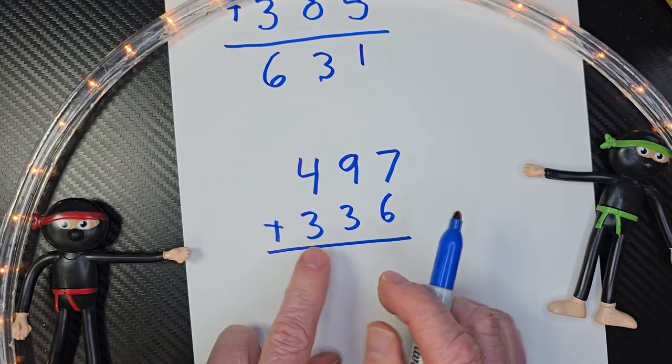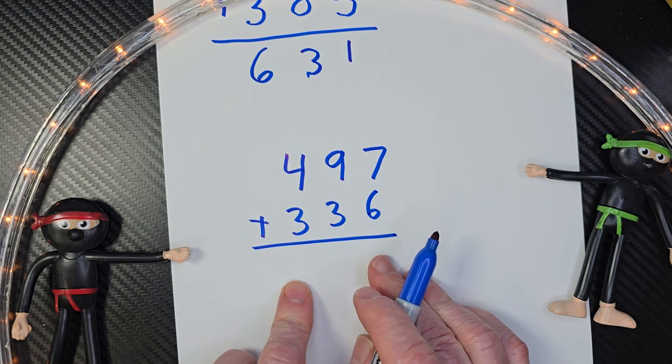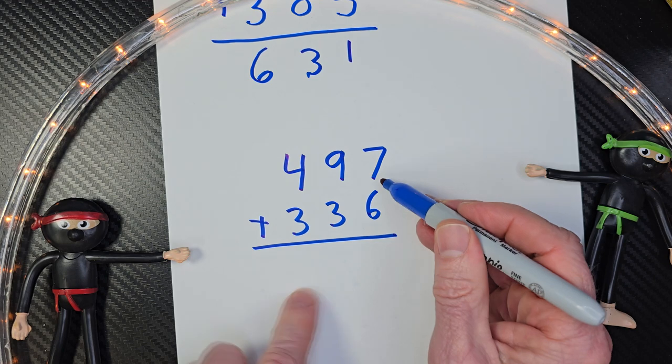If you'd like to try this, do it on a piece of paper and then come back and check it with me. Alright, let's go ahead. Seven plus six.